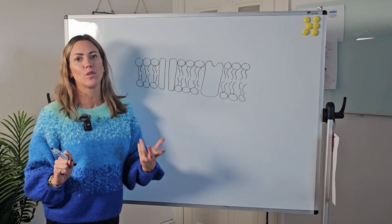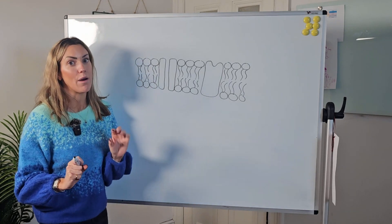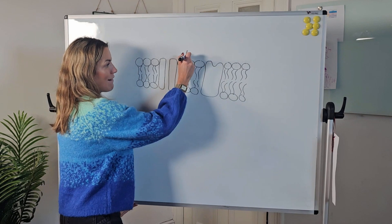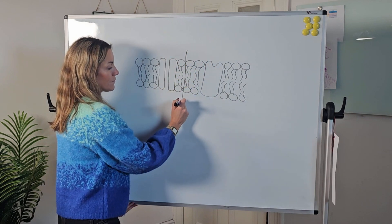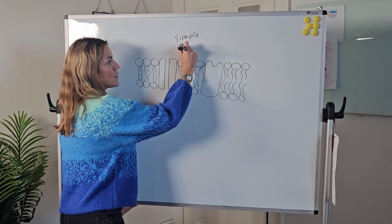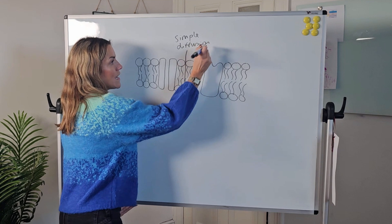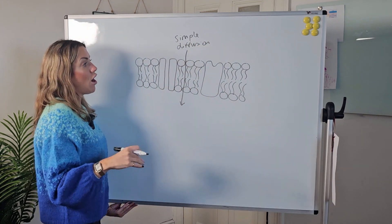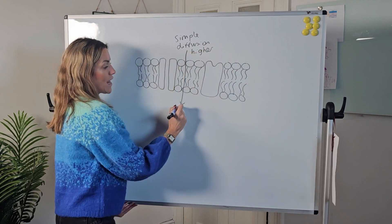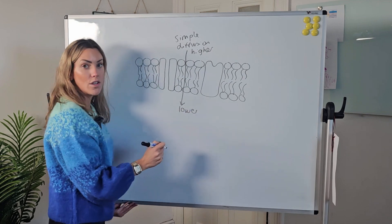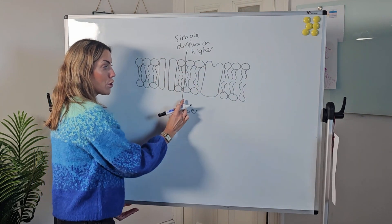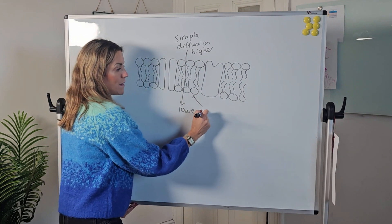Let's start with simple diffusion, which is what you learned about at GCSE. Simple diffusion involves the diffusion of a substance from an area of higher concentration to an area of lower concentration, but this diffusion takes place through the phospholipid bilayer.